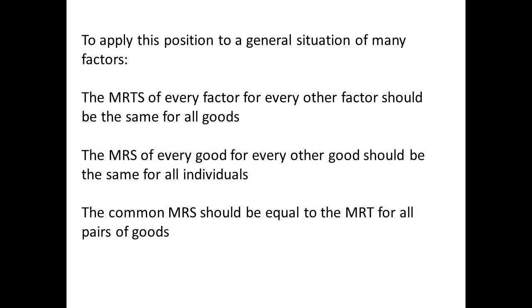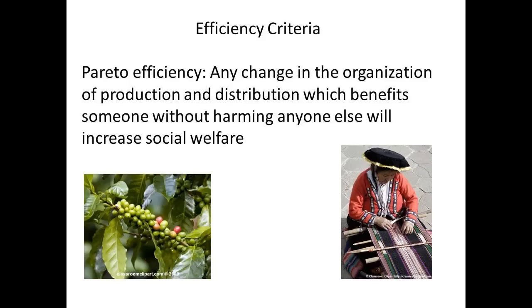Our model only represented two individuals, but we can easily amend it to apply to a general situation. The marginal rate of technical substitution of every factor should be the same for all goods. The marginal rate of substitution for every good should be the same for all individuals. The marginal rate of substitution should be equal to the marginal rate of transformation for all pairs of goods. Using Pareto efficiency, any change in the organization of production and distribution which benefits someone without harming anyone else will increase social welfare.